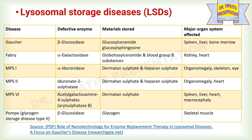This table shows various lysosomal storage diseases, their defective enzymes, materials stored, and major organ systems affected. For Gaucher disease, the defective enzyme is beta-glucosidase. For Fabry disease, it is alpha-galactosidase. For MPS1, it is iduronidase. For MPS2, it is iduronate-2-sulfatase. For MPS6, it is arylsulfatase B. For Pompe disease, it is beta-glucosidase.